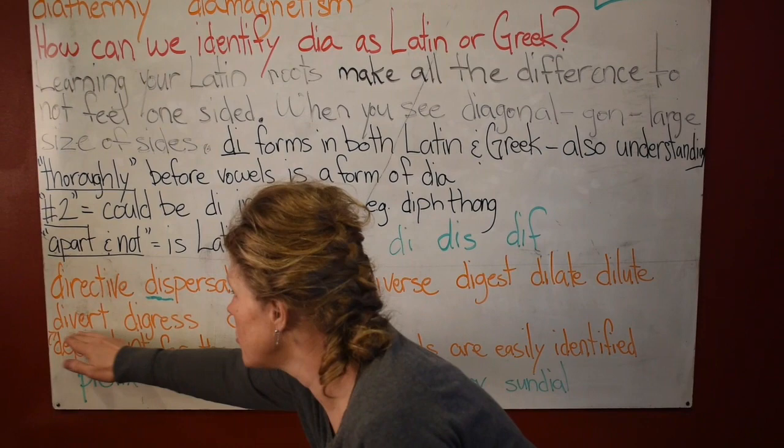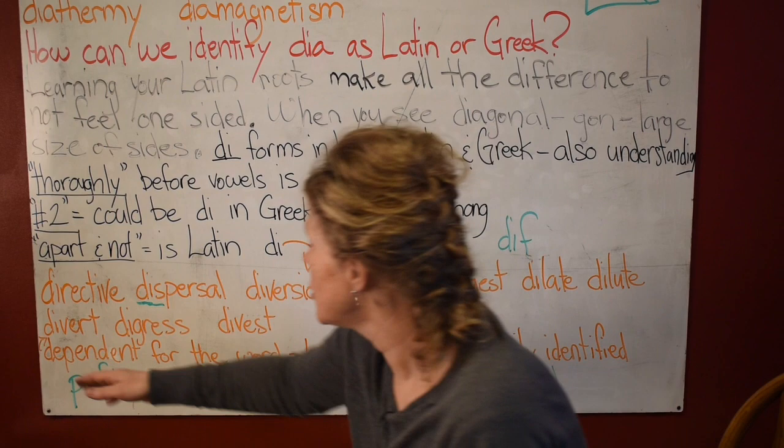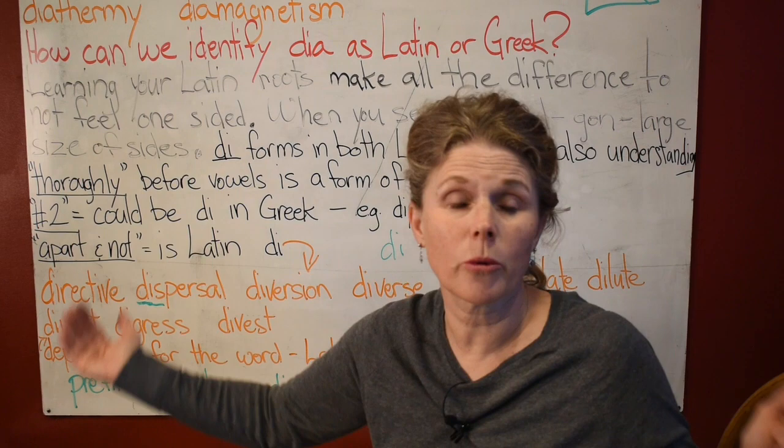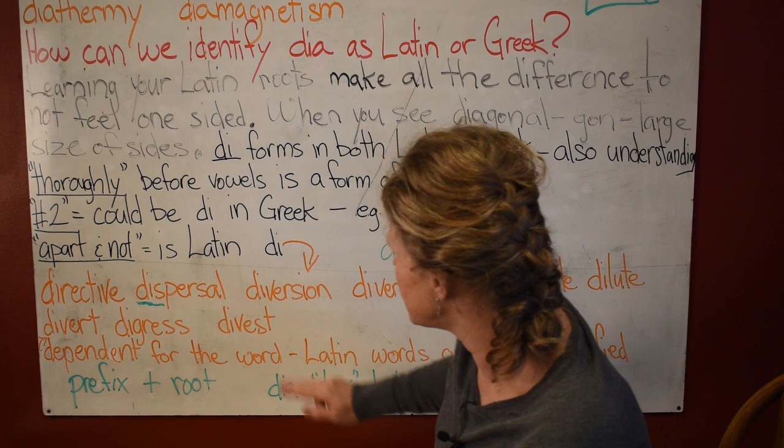Take 'divert' — you can switch that to 'diversion,' so you know it's either going to mean 'a part' or 'not.' Think about this: is 'divert' a part or not? You're breaking something apart — you're causing a diversion, breaking apart what's going on somewhere else. You can see how that helps you understand words like 'digress' or 'divest.'